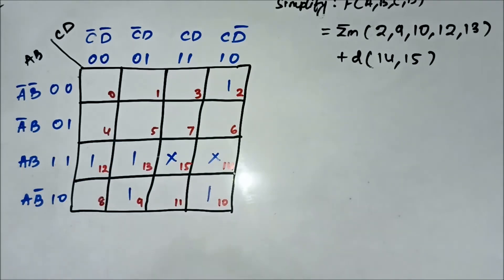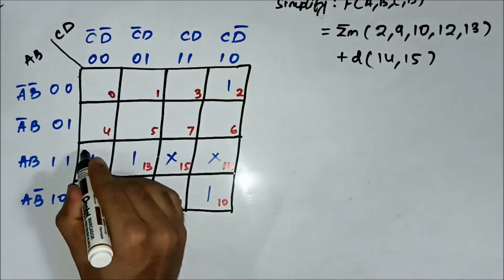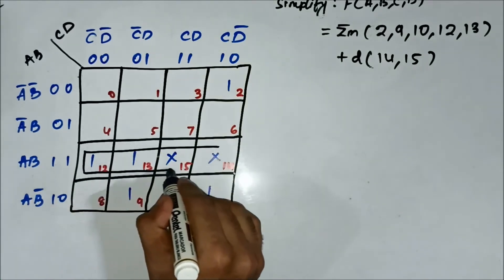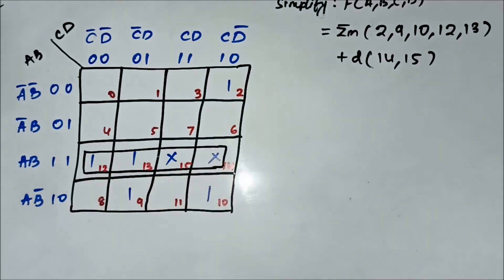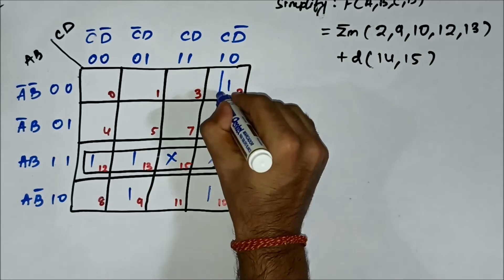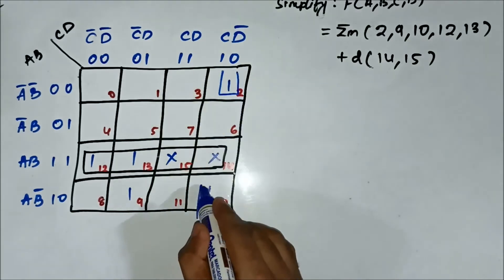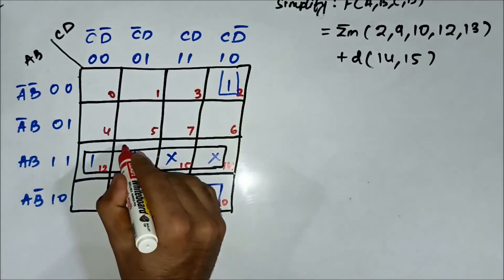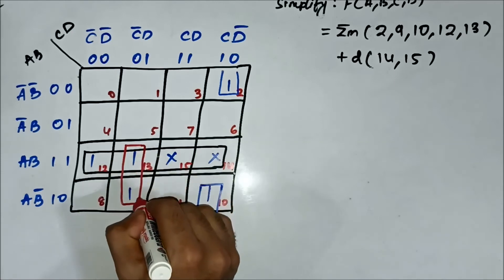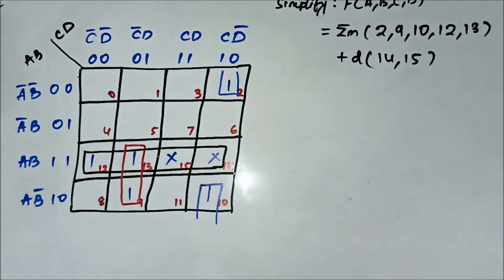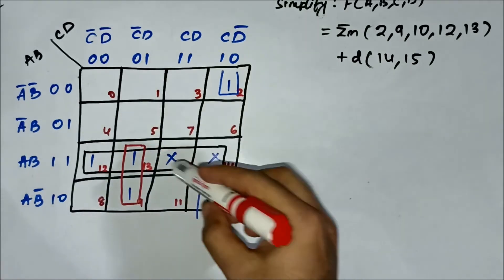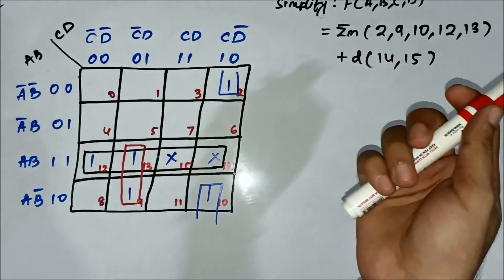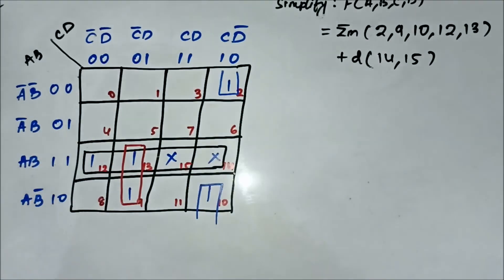Now we form the groups. We can form a quad here first, then we can form a pair here, and then another pair here. All the one-marked cells have been covered. No X-marked cell is left behind here, but even if one were, there would be no need to form an extra group.